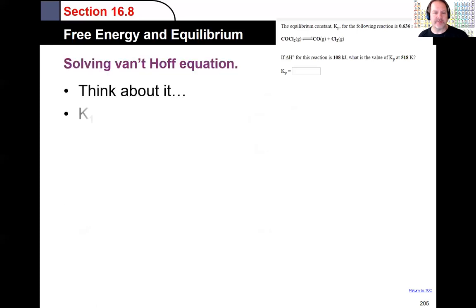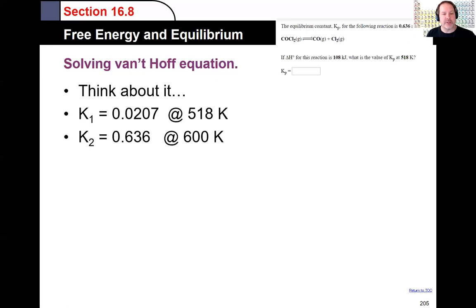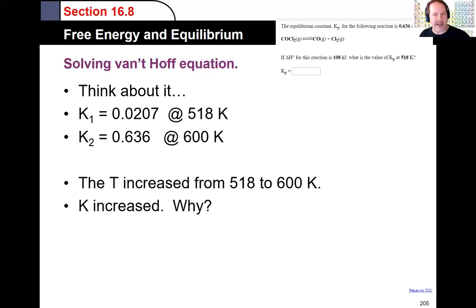We started off with K1 is 0.0207 at 518 Kelvin. Temperature 2 was at 0.636 at 600 Kelvin. So as the temperature increased, so did the equilibrium. But why is that? Well, isn't it always that way? If you increase the temperature, increase the equilibrium constant.